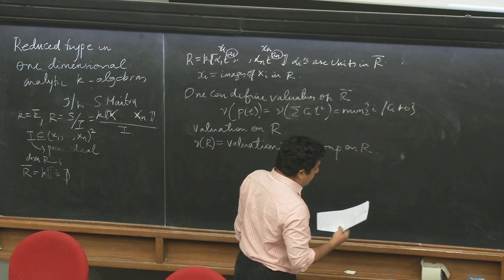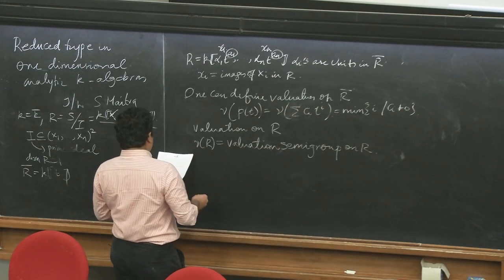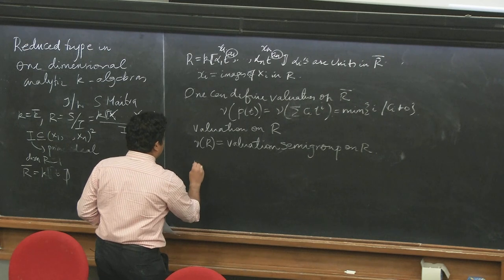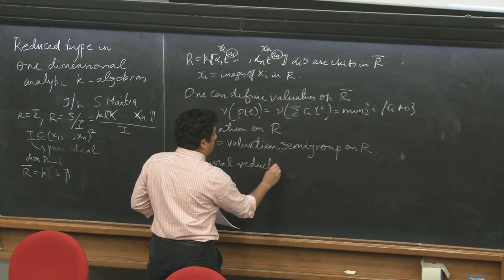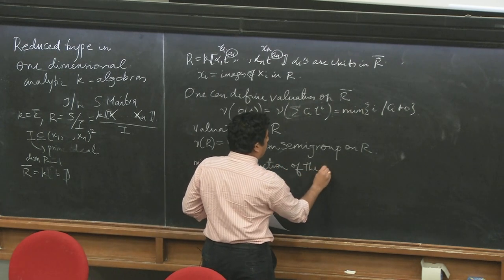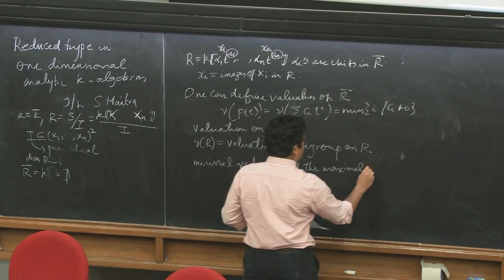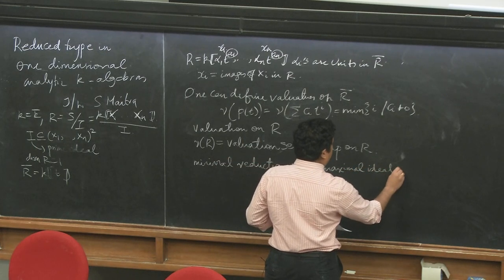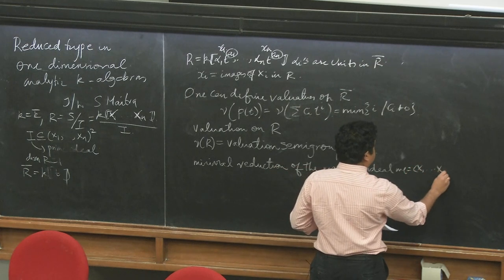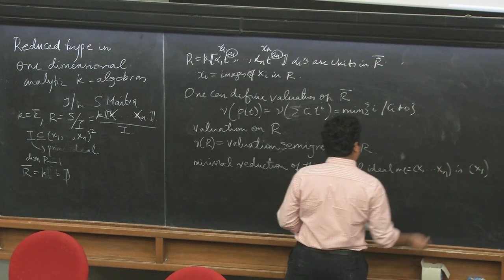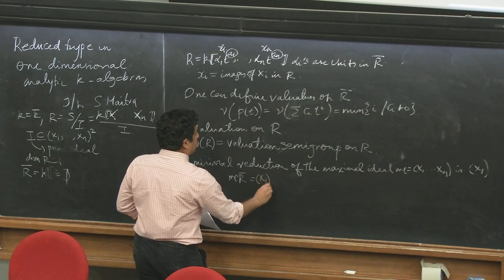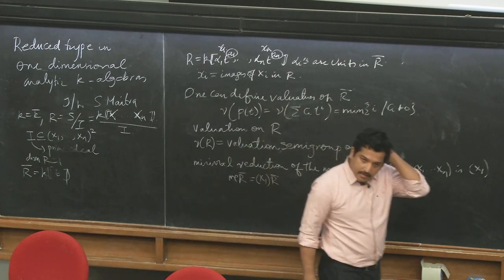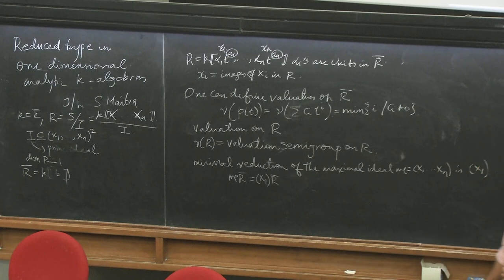There is a very strong relationship between the ring and the valuation semigroup: if the valuation semigroup exhibits some properties, then the ring also exhibits equivalent properties. Also note that the minimal reduction of the maximal ideal (x1, ..., xn) is the ideal generated by x1 alone, precisely because if you extend the maximal ideal to the integral closure it is principally generated.